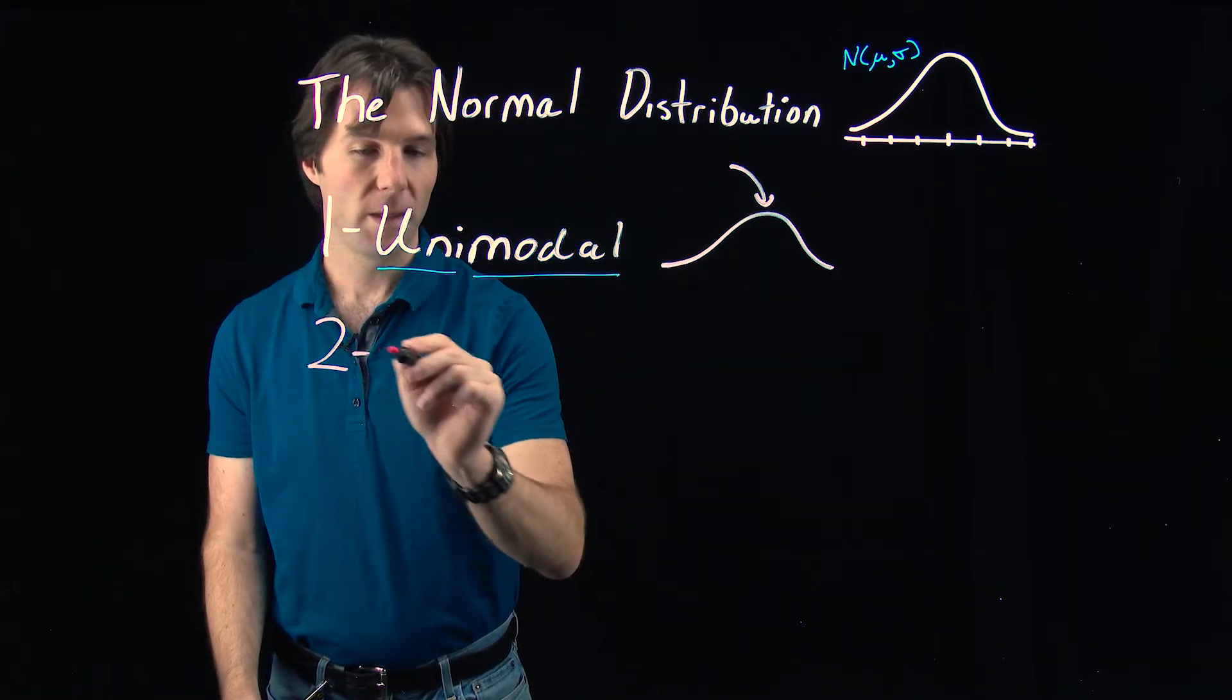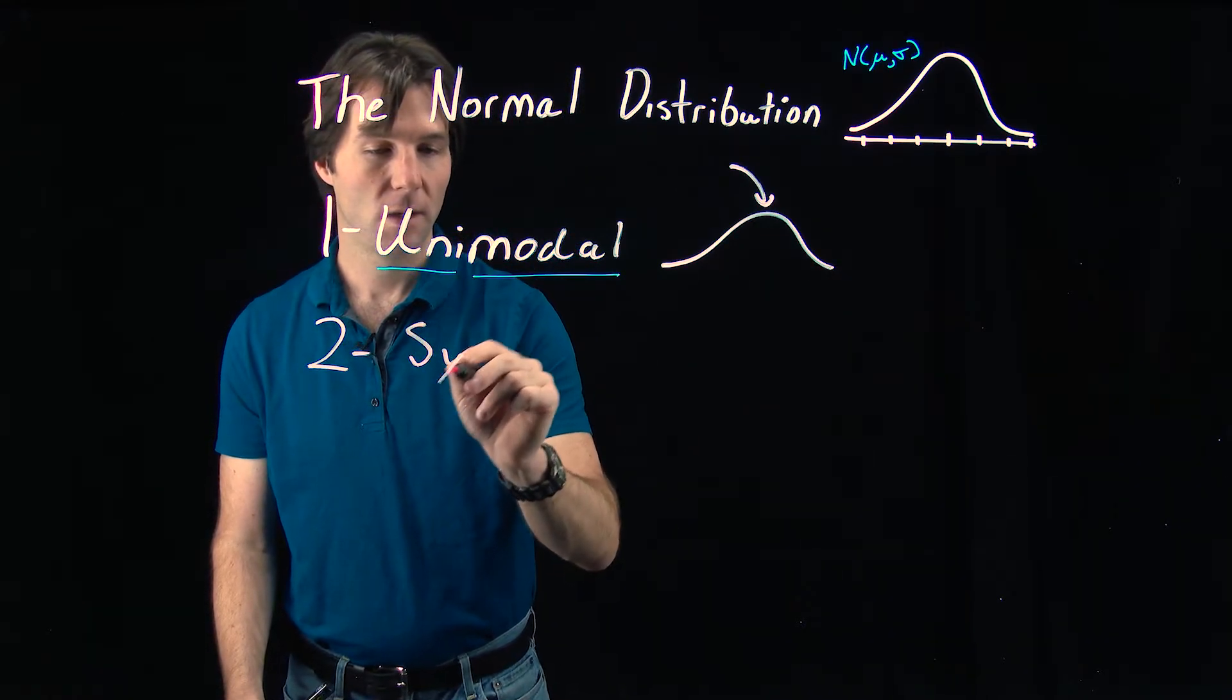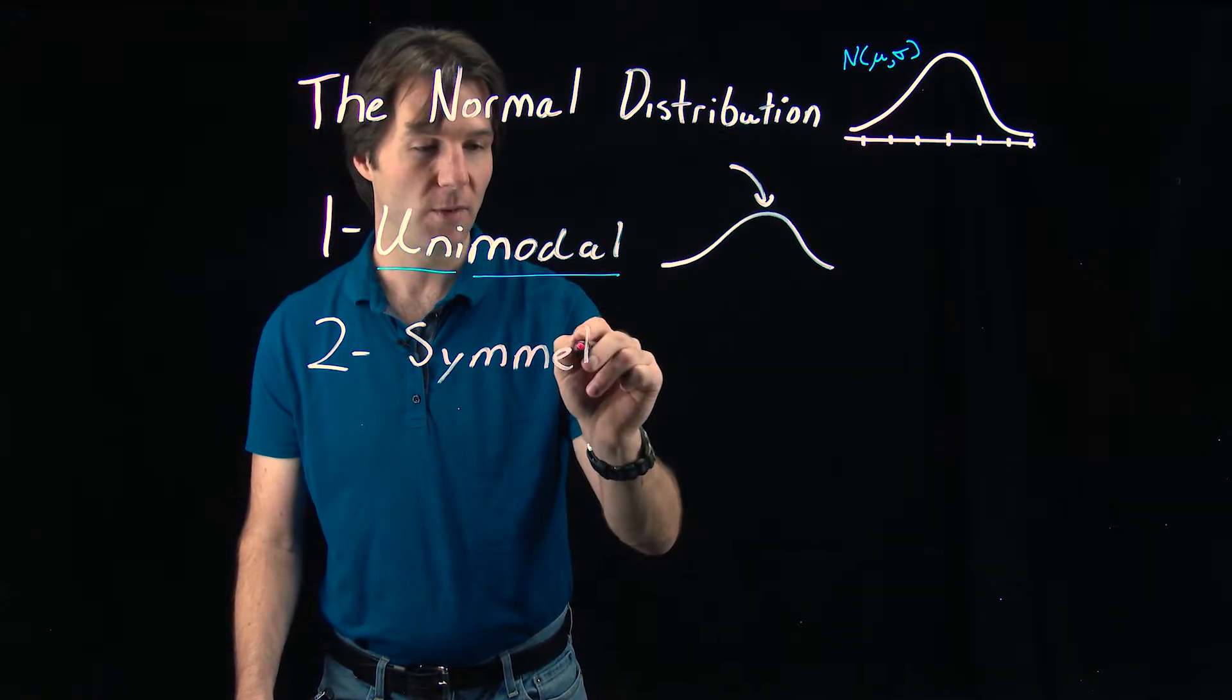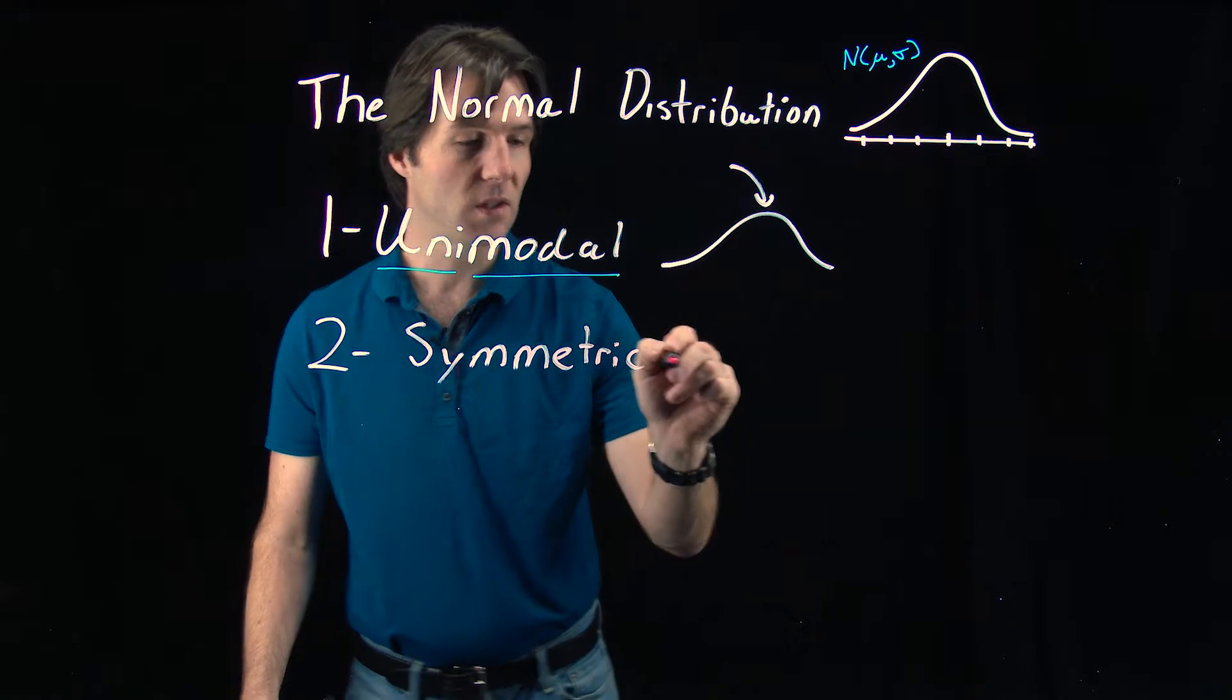The second thing we should know is that it is symmetric. Symmetric basically means if we fold the curve over on itself across the middle of it, it'll look the same on either side.